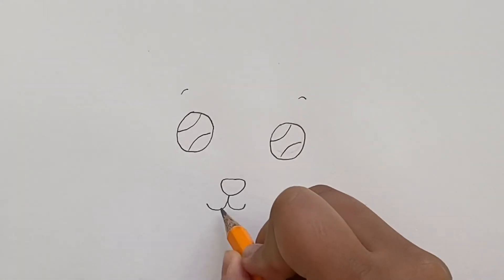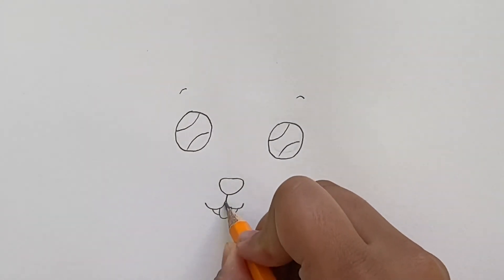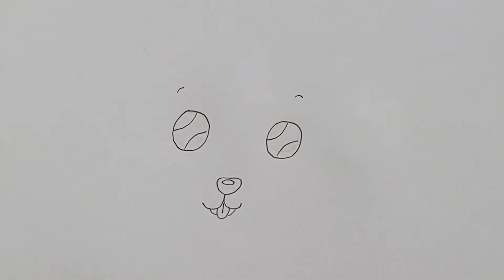Now we're going to draw the mouth, and we're going to add the little tongue, and we're just going to add the side parts. Now we're going to draw a line in the tongue, and we're going to draw a circle in the nose.